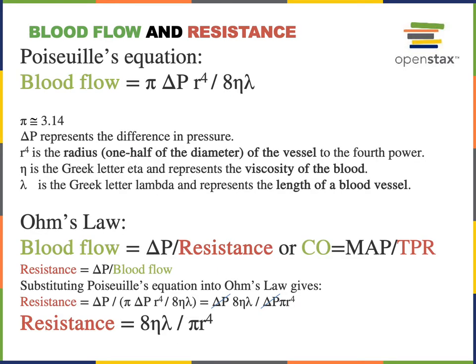Poiseuille's equation describes the rate of blood flow as a function of change in pressure, radius, viscosity, and blood vessel length. Blood flow equals π·ΔP·r⁴ divided by 8ηλ. Pi is just a constant, 3.14. Delta P is the change in pressure between two points in a blood vessel — such as the two ends. Since pressure is the force driving blood flow, increasing pressure will increase blood flow.